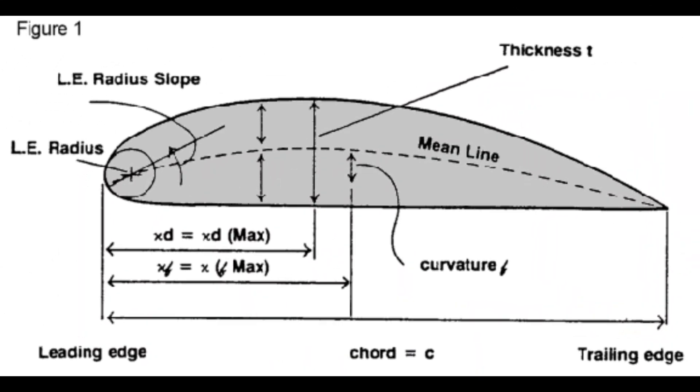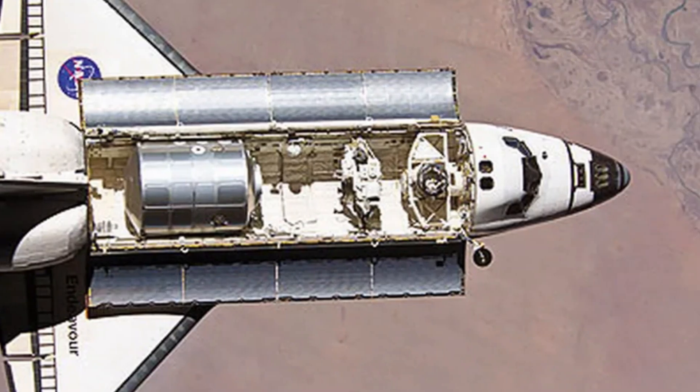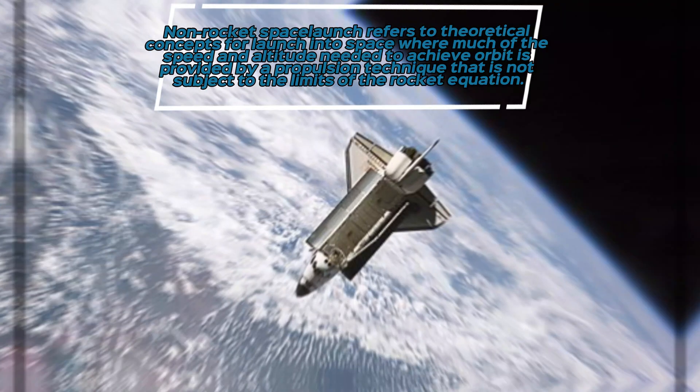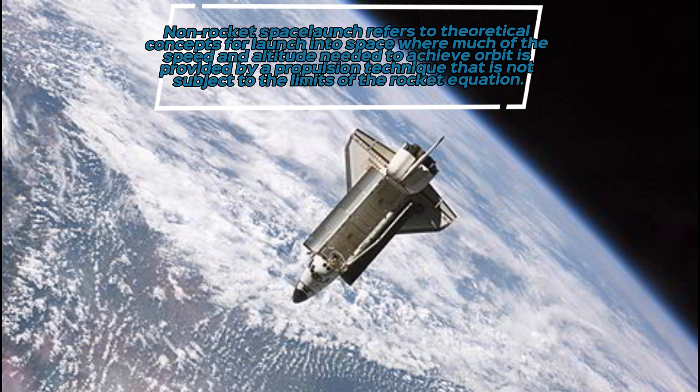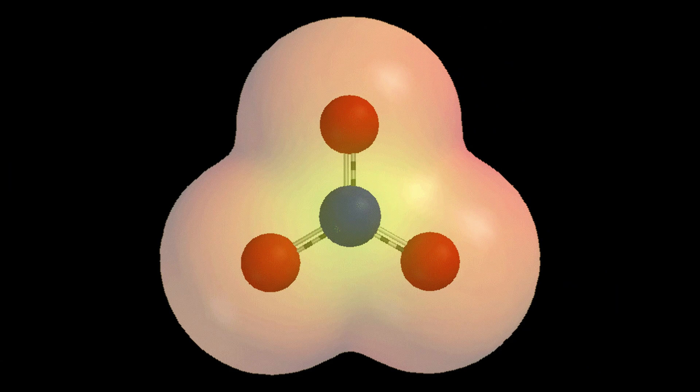An ion engine cannot usually generate sufficient thrust to achieve initial liftoff from any celestial body with significant surface gravity. For these reasons, spacecraft must rely on other methods, such as conventional chemical rockets or non-rocket launch technologies to reach their initial orbit.